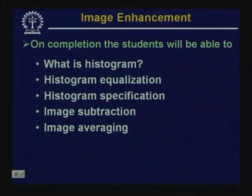All these different point processing techniques do not consider the overall appearance of the image — they simply transform a particular intensity value to produce an output intensity value. In today's discussion, we will talk about another approach where transformation techniques also take care of the global appearance of the image. The histogram is such a measure which provides a global description of the appearance of an image, and today's enhancement techniques are based on histogram-based processing.